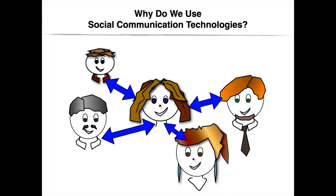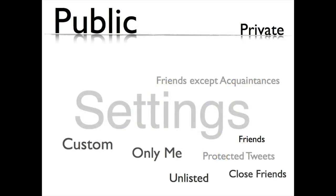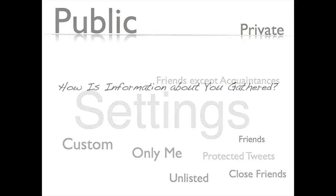Whether these sites are personal network platforms such as Facebook, or microblogging platforms such as Twitter, or location platforms such as Foursquare, or content sharing platforms such as YouTube, or even shared interest platforms such as LinkedIn, most of them publish and share your information publicly unless you are aware of their default settings and modify them before posting anything online.